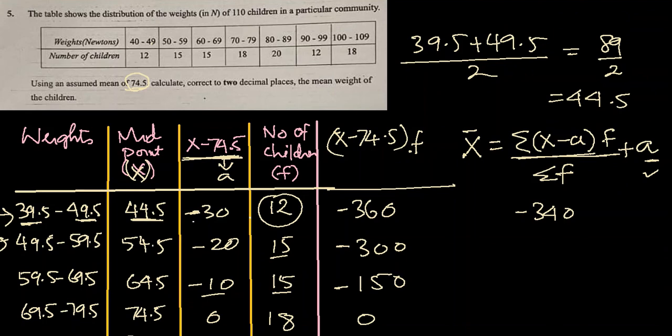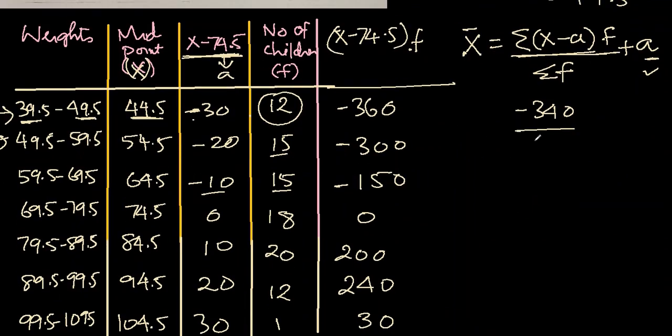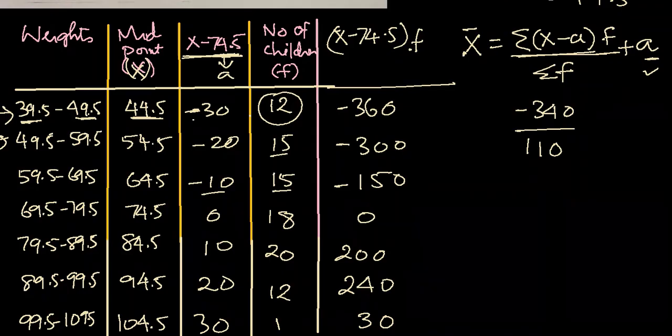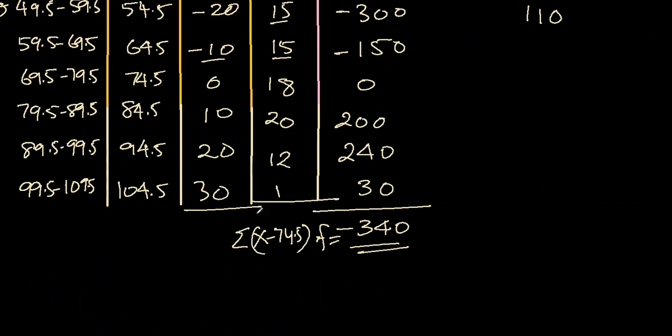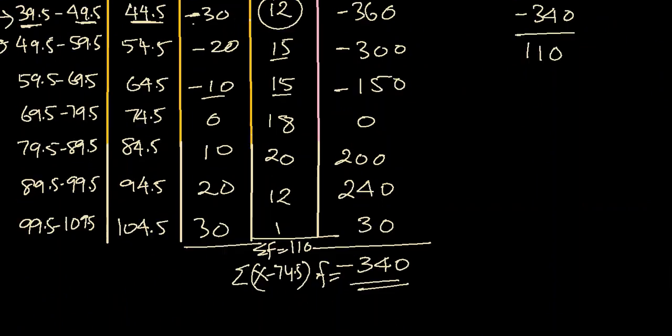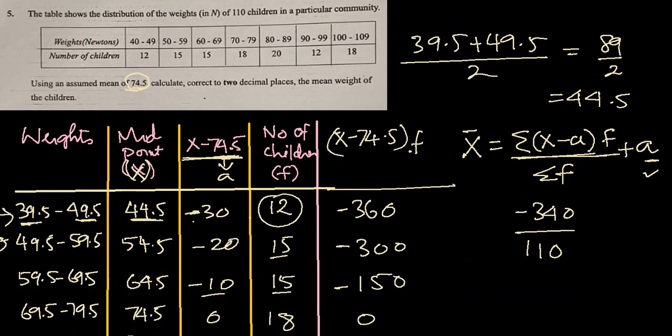How many children are there? 110 children they have already given us. So basically, if I add all of them, sigma f will be 110 given by this. I'm not adding because they have already given it. So plus 74.5.